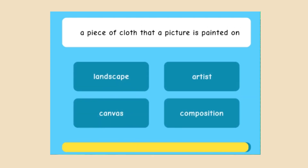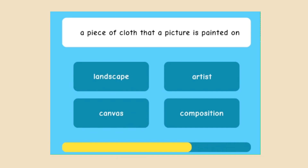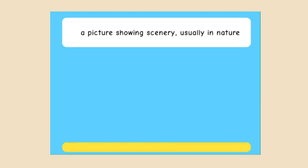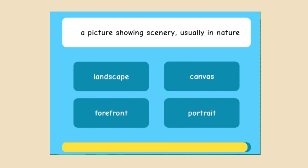A piece of cloth that a picture is painted on — a landscape, an artist, canvas, or composition? Canvas is the correct answer.